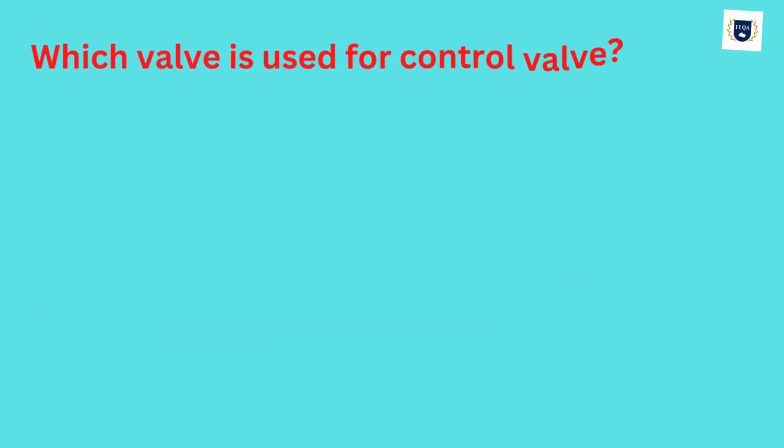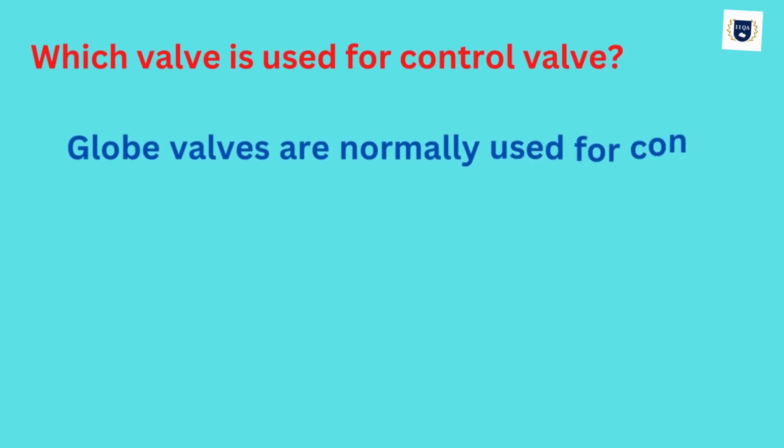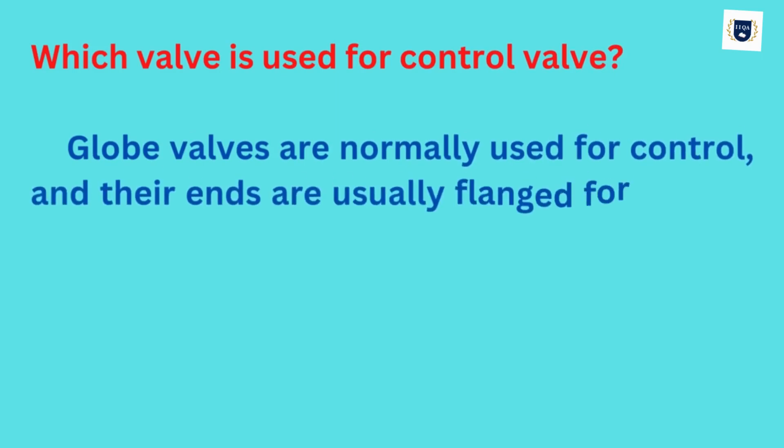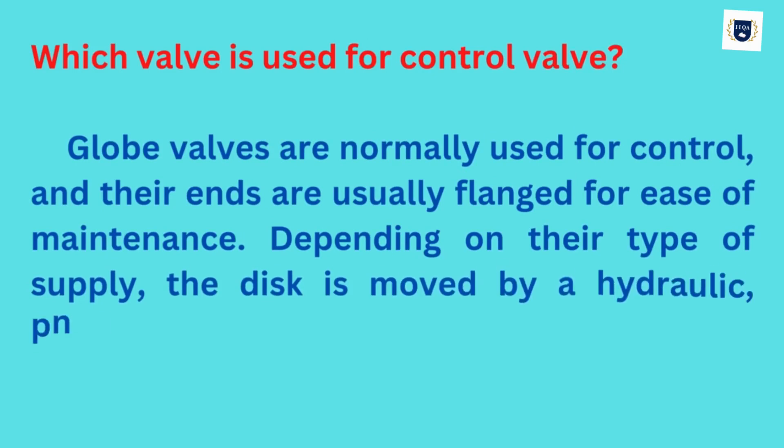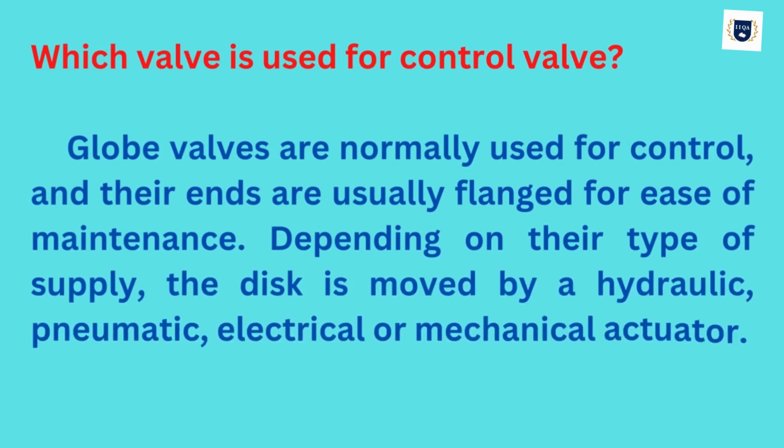Which valve is used for control valves? Globe valves are normally used for control and their ends are usually flanged for ease of maintenance. Depending on their type of supply, the disc is moved by a hydraulic, pneumatic, electrical, or mechanical actuator.